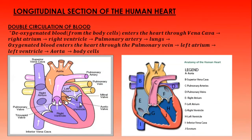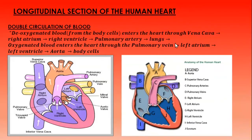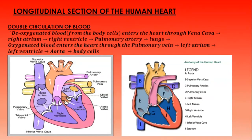From the left atrium, blood moves across the valves into the left ventricle. With pressure, this oxygenated blood is pumped into the aorta. The aorta distributes the blood to all body parts. Once the blood reaches the body cells, the oxygen is used up, and it returns as deoxygenated blood into the vena cava, and then the process is repeated.